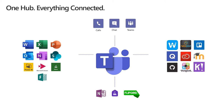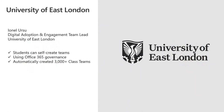We're here in the IT Pro admin track, so let's talk about how we can achieve this kind of scale using Microsoft Teams. We're going to look to the University of East London. This video will show how UEL went all-in with Teams — enabled students to do self-governance and self-create teams, used Office 365 governance to control everything, and automatically created 3,000+ class teams with the proper content, allowing students a safe space to collaborate while managing the lifecycle efficiently.